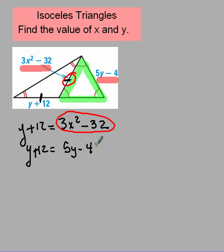From here, now this just becomes an algebra problem. I've got 5y minus 4 on one side and y plus 12 on the other. So I like to keep my variables positive, so I'm going to move the y first.